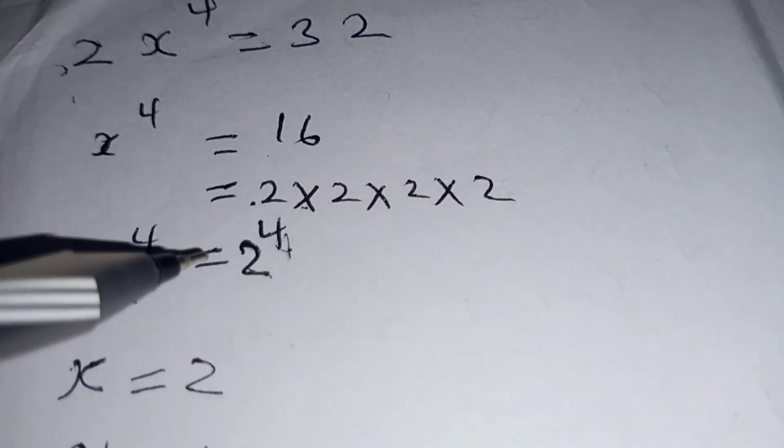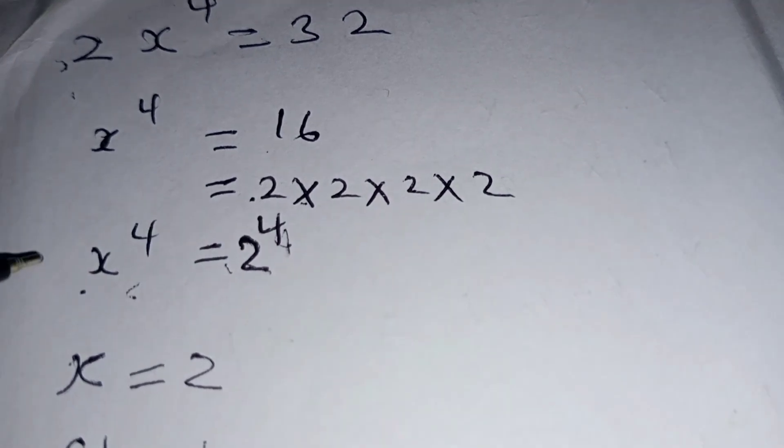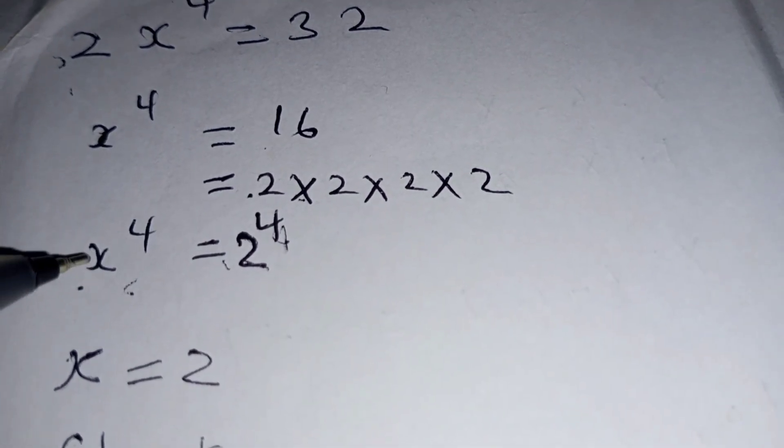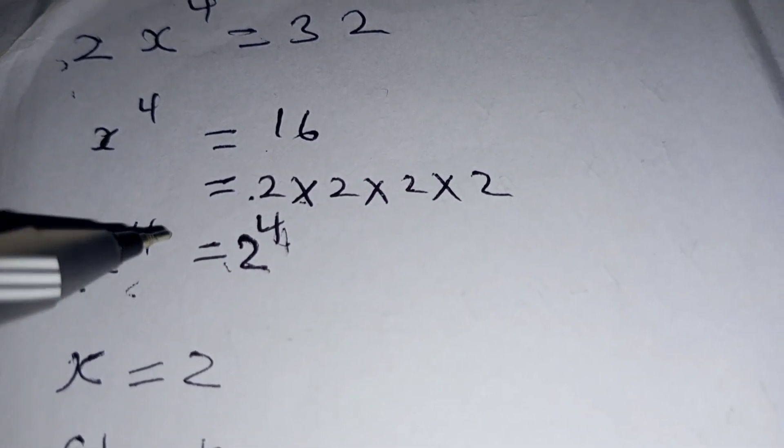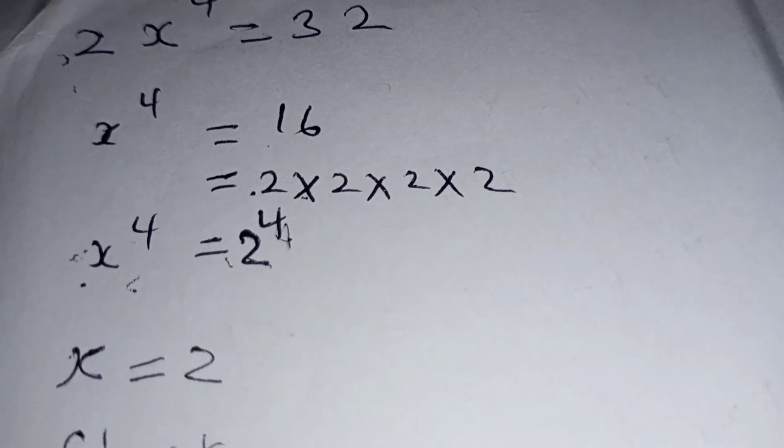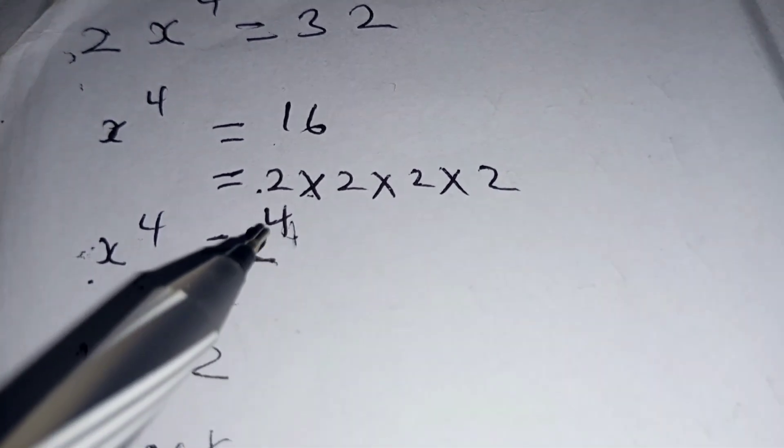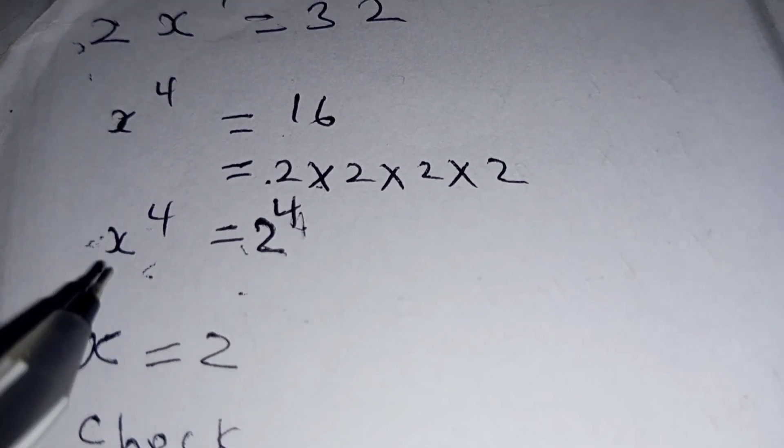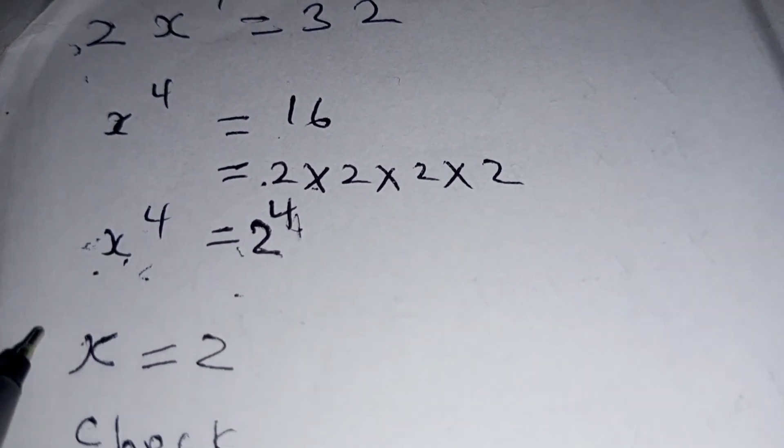16 can be written as 2 times 2 times 2 times 2, which is the same as 2^4. Here we noted that the indices are the same: you have x^4 and 2^4, meaning that our x is equal to 2.